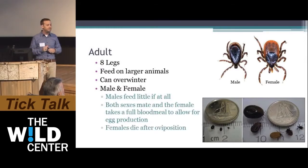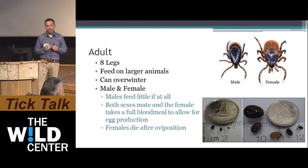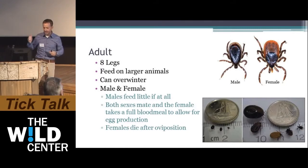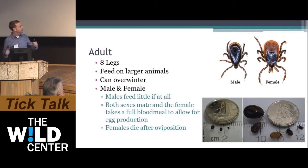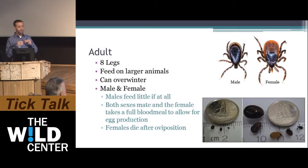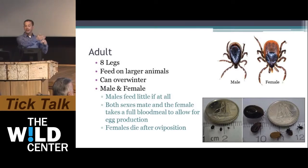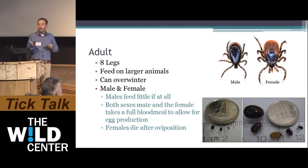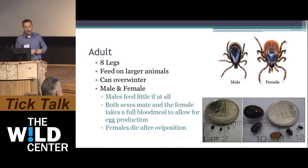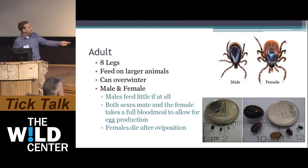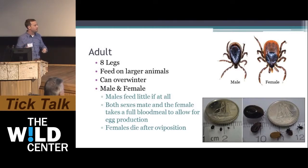Males actually feed very little, if at all. They're only there to mate with the female to produce eggs. The female then takes a full blood meal to allow for the 3,000 eggs, and the female actually dies after it lays the eggs. Here you can see the adult female in different stages of engorgement — it takes about five to seven days to fully engorge on a blood meal.